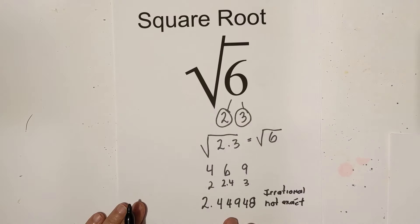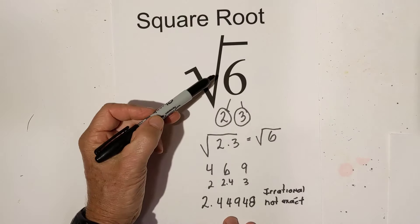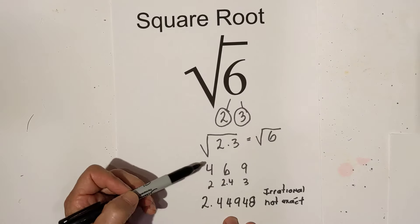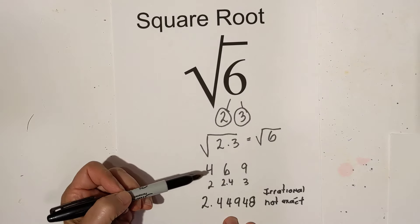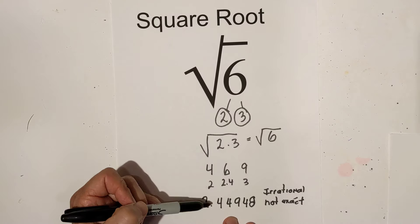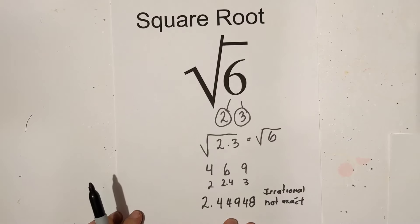So in summary, let's go through it. Square root of 6 simplified is square root of 6. To estimate, I came up with 2.4 because you have 4 and 9 on each side. Square root of 4 is 2, square root of 9 is 3. And if you put it in the calculator, it's 2.44948.